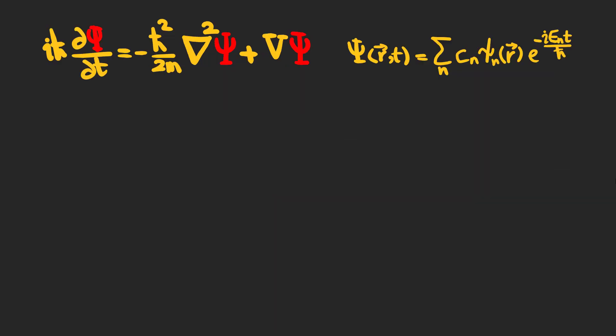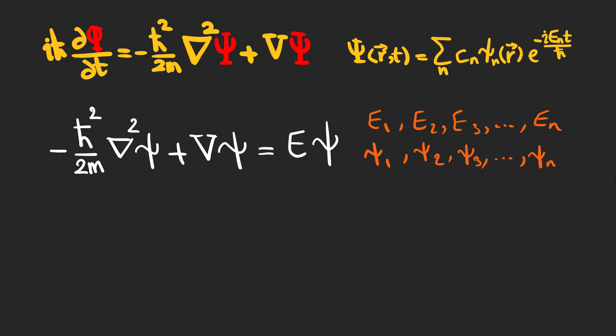Now that we know how to find a solution to the Schrödinger equation, what we need to do is to find possible solutions to the time-independent Schrödinger equation. By solving this equation, we expect to find n energy values and n states, which are the particle's different possible energy and states.